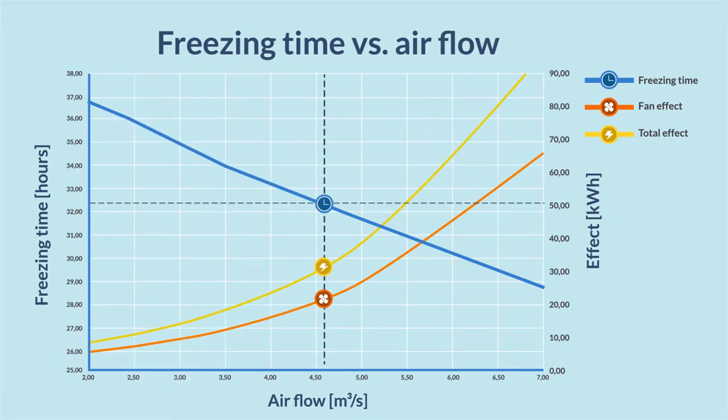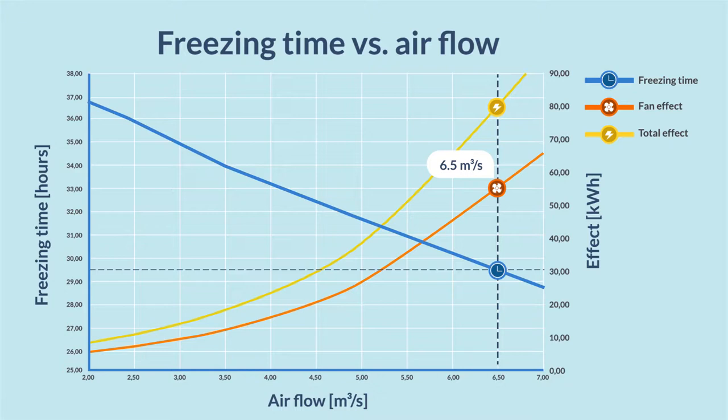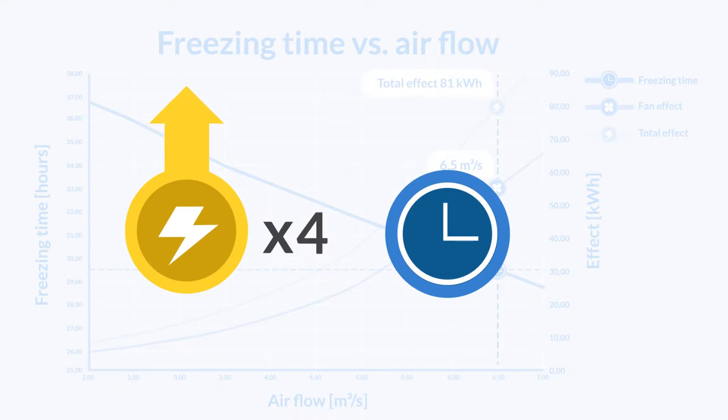When increasing air flow to 6.5 cubic meters per second, the freezing time shortened from 36 hours to 29.5. However, the energy consumption increased to 81 kilowatts, a shocking seven-fold increase, just to reduce the freezing time by 6.5 hours, or less than 20%.